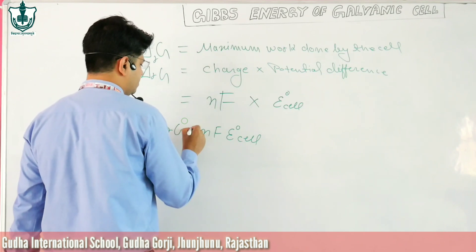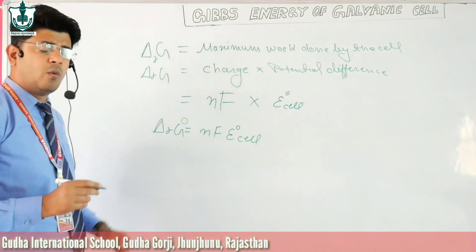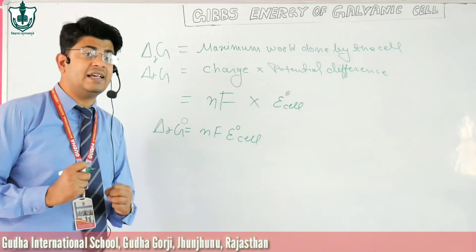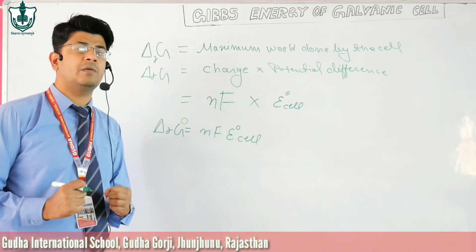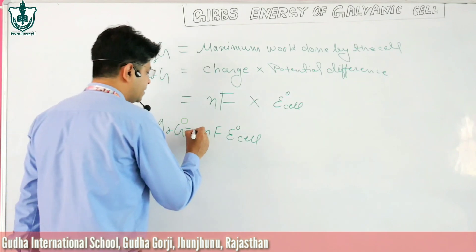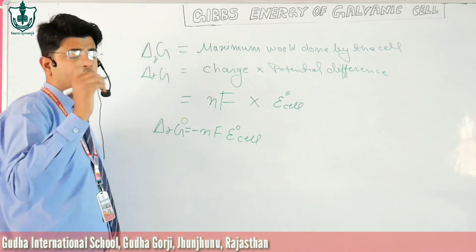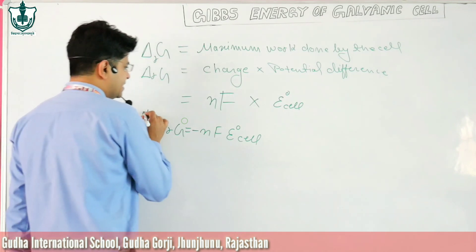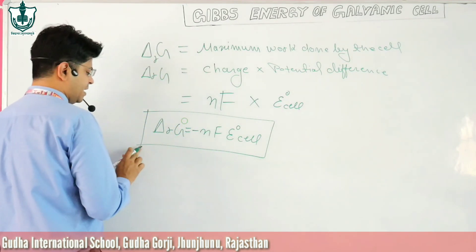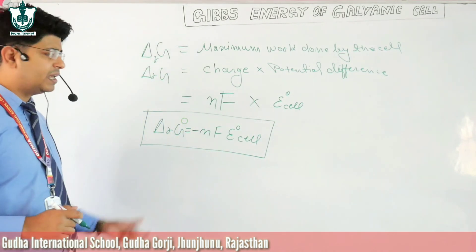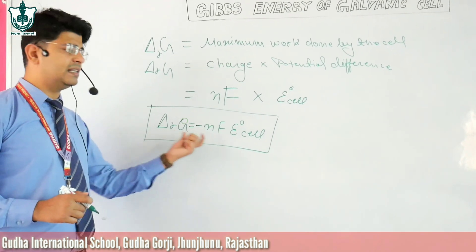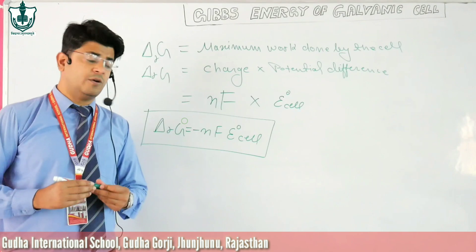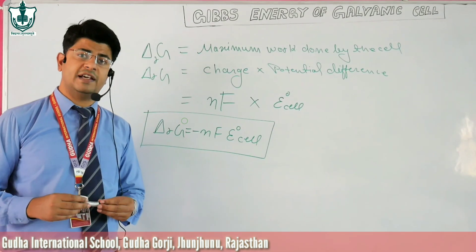Since work is done by the system, its energy is decreasing, so we apply a negative sign according to IUPAC convention. The final formula is: ΔrG° = −nFE°cell. This formula tells us the relation between Gibbs energy and the standard potential difference, or EMF, of the cell.